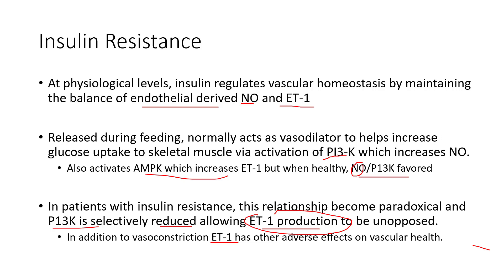We can also touch on GLUT4 receptors. The reason insulin resistance is such a problem is that we lose the ability to uptake glucose. In patients with diabetes, we see insulin levels super high — your body just tries to secrete more and more of it. The receptors are no longer sensitive to it, and blood glucose stays elevated. Everything's up, nothing's working. We think exercise training can play a role in bringing this back to balance.